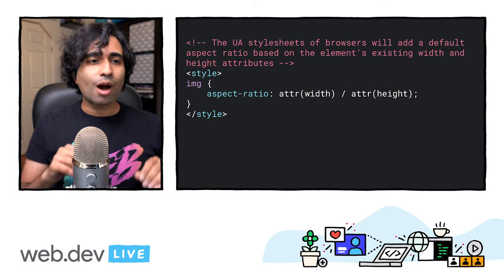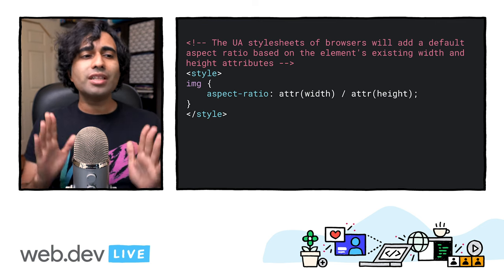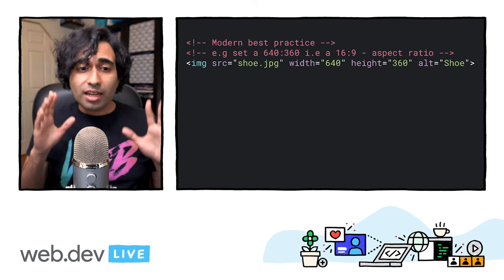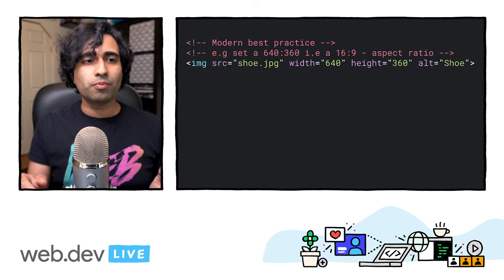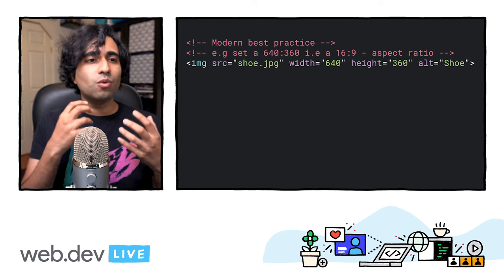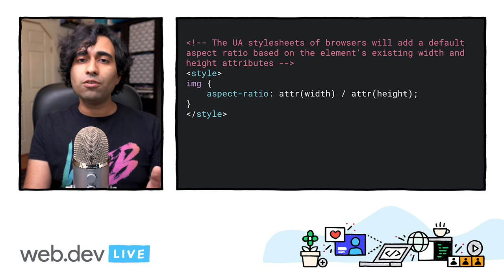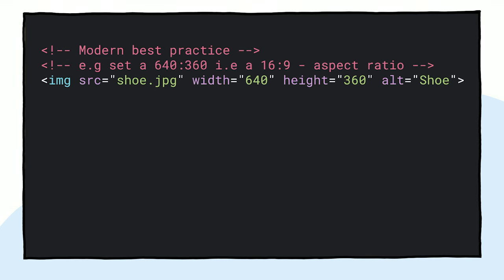Modern browsers now set the default aspect ratio of images based on an image's width and height attributes, so it's really valuable to set them to avoid layout shifts. The CSS working group has done work that allows us to set width and height as normal, and this calculates an aspect ratio based on those attributes before the image is loaded. As long as you're providing width and height, the aspect ratio can be calculated and layout shifts can hopefully be avoided.